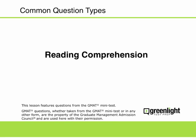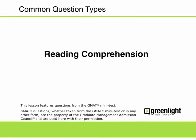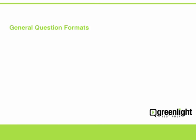The reading comprehension questions on the GRE appear in several different general formats. First, choose a single answer. These are the standard five-answer multiple choice questions. Your job is to select the best answer from a set of five answer choices.